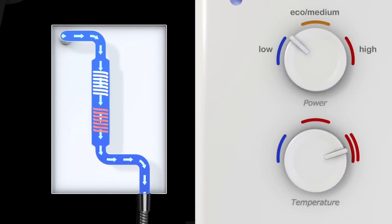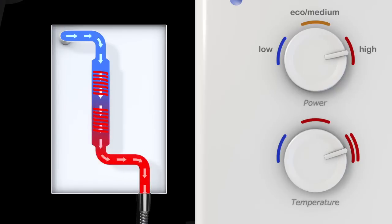The user adjusts the power control to change the number of active heating elements and the temperature of the shower. The temperature control varies how quickly the water flows across the heating elements.